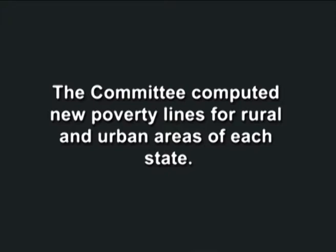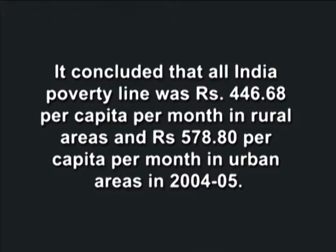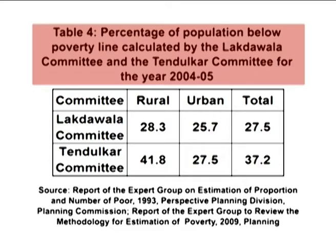The committee computed new poverty lines for rural and urban areas of each state. To do this, it used data on value and quantity consumed of the items mentioned above by the population classified as poor by the previous urban poverty line. It concluded that the all-India poverty line was rupees 446.68 per capita per month in rural areas and rupees 578.80 per capita per month in urban areas in the year 2004-05. The table on the screen outlines how the percentage of population below the poverty line changed after the application of Tendulkar Committee's methodology.